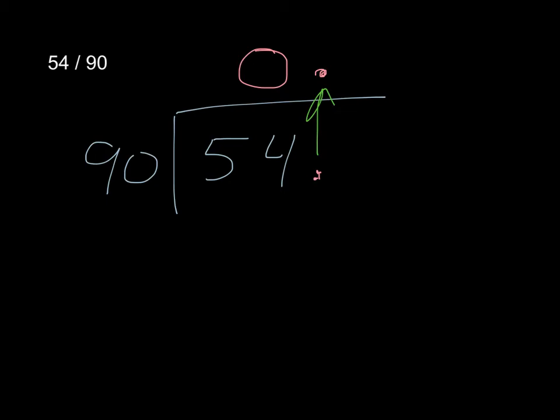We also know that 90 does not go into 54, but we can put a 0 in the tenths place, and we look at it and say, we know that 90 goes into 540. We're not sure how many times.